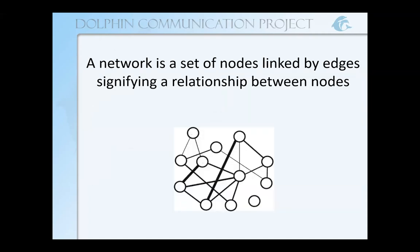A network is simply a set of nodes that are linked by edges, which signify a relationship between the nodes. In this really simple example network, these white circles are our nodes and the lines between them are called edges. In some networks, we're able to draw the edges so that their thickness is also proportional to the strength of whatever relationship we are representing.